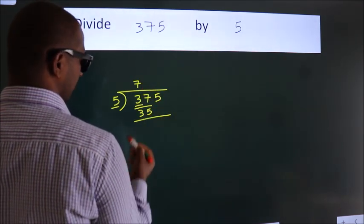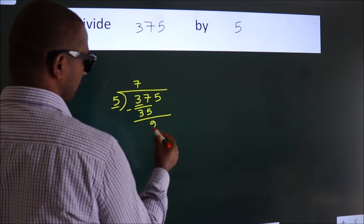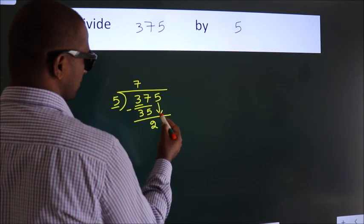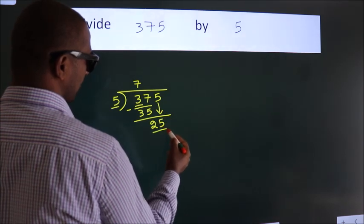Now we should subtract. We get 2. After this, bring down the beside number. 5 down. So, 25.